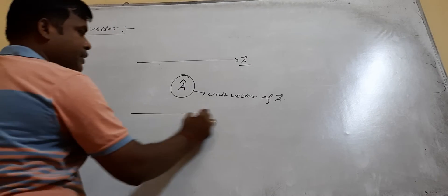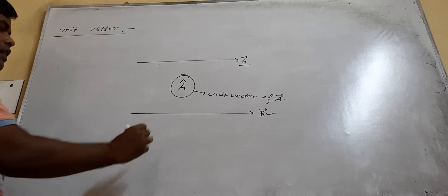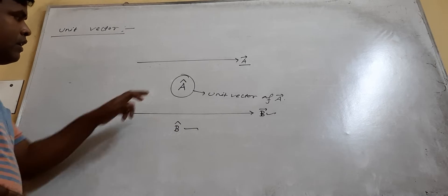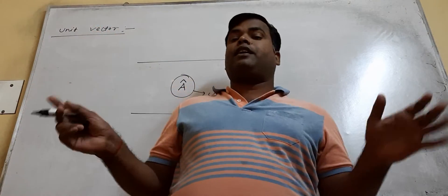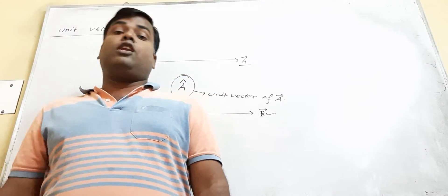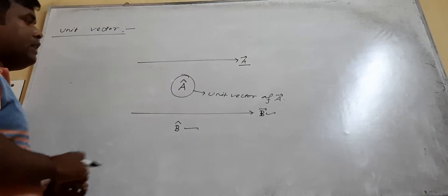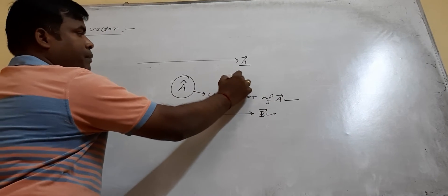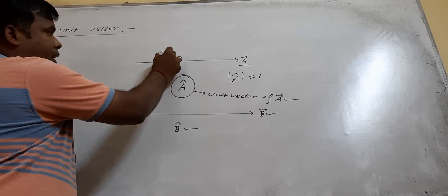Similarly, if you have vector B, the unit vector of B is B-cap. A cap on the symbol means it represents a unit vector, meaning its magnitude is one unit and its direction is along the direction of the given vector. B-cap is the unit vector of B: magnitude is one, and direction is along the direction of the given vector.